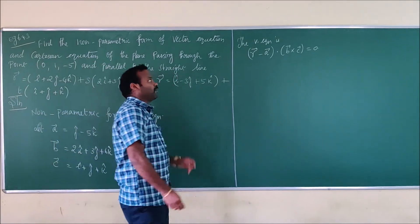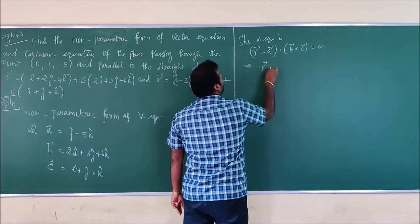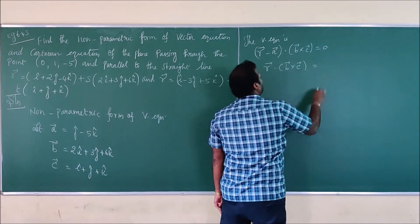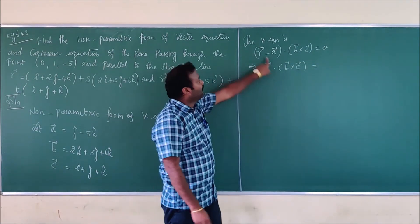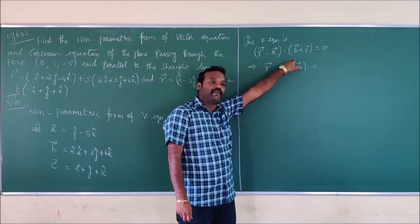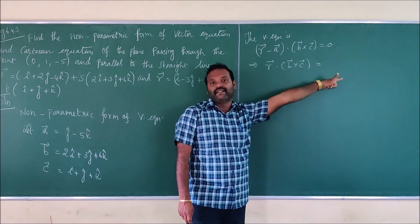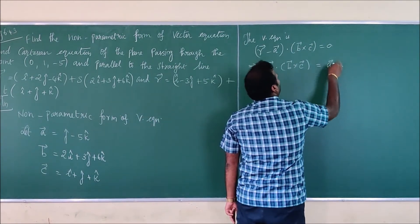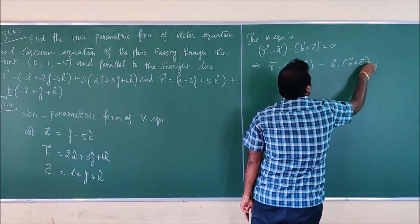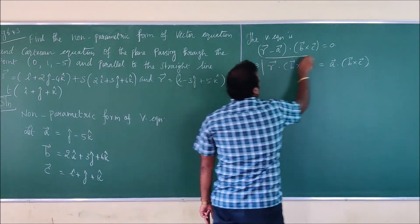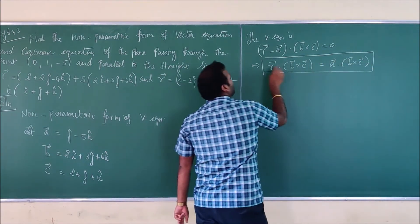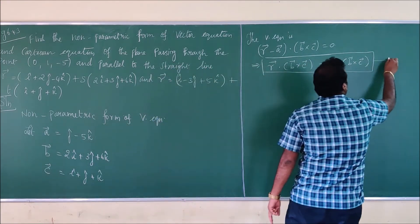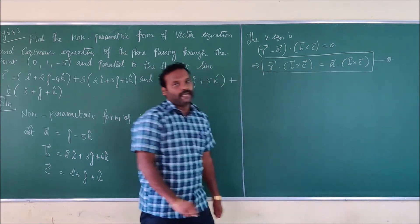This formula can also be written as: r-vector · (b-vector × c-vector) = a-vector · (b-vector × c-vector). The 'a-vector' term moves to the right-hand side and becomes positive. So our aim is to find b-vector × c-vector and substitute it into this equation. Let me mark this as equation number 1.